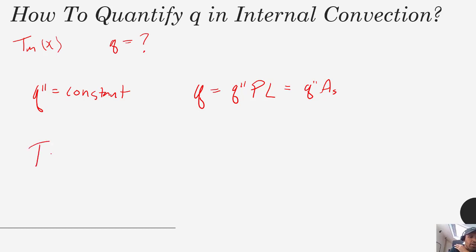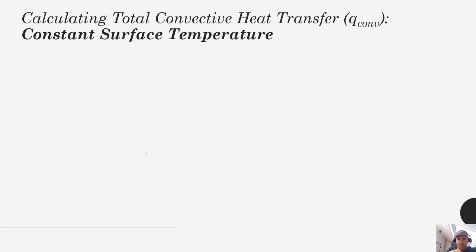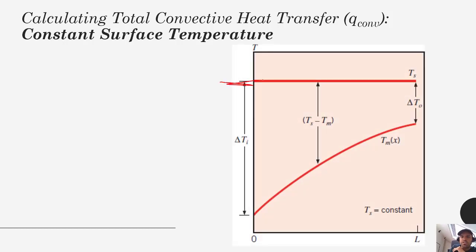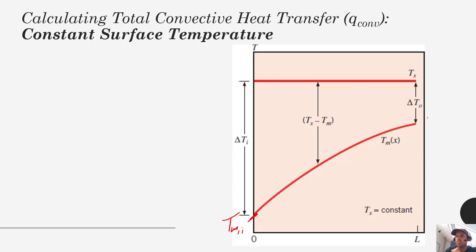It gets harder when our surface temperature is constant. When our surface temperature is constant and our mean temperature is changing, the flux will not be applied uniformly, so it's not a matter of simple multiplication. The fluid is heated gradually until eventually, for a very long pipe, the fluid would reach the pipe temperature. Toward the end of the pipe you reach a point of diminishing returns where your driving force is low and the heat added is much lower.